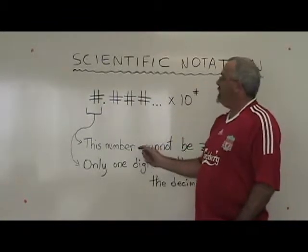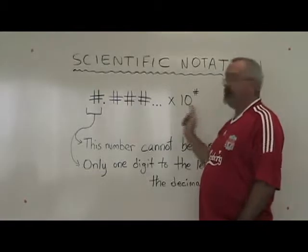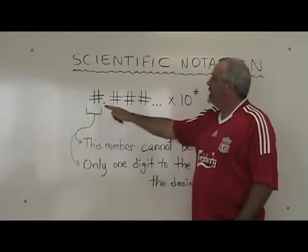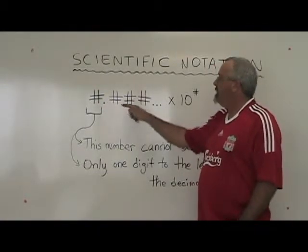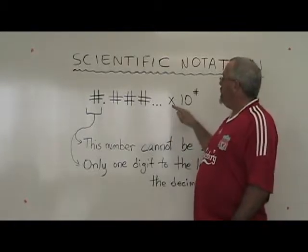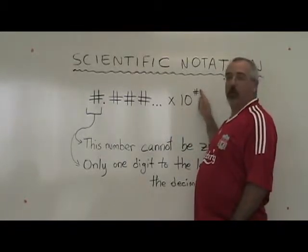Therefore, scientific notation numbers will always have a form like this: one digit, followed by the decimal, followed by several more digits, and then you multiply by ten to the power of another number.